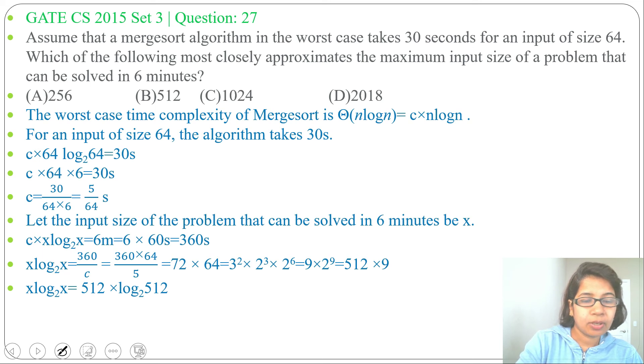We got x log₂x × log₂512. This log₂512 equals to 9, because 2⁹ equals to 512. So we got x value equals to 512. For input 512 it will take 6 minutes, so the answer will be option B, 512.